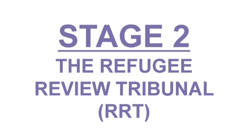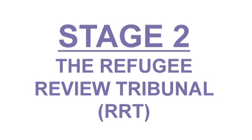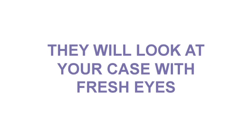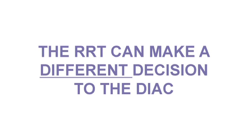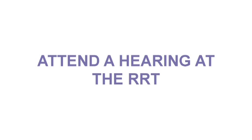The second stage is called the Refugee Review Tribunal, also called the RRT. You can go to the RRT if DIAC refuses to grant you a protection visa — you have the right to ask the RRT to look at your case again. The RRT can look at your case with fresh eyes, consider all the information, and make a different decision to the DIAC. At this stage you'll have to attend a hearing and explain your claims again to the tribunal member.